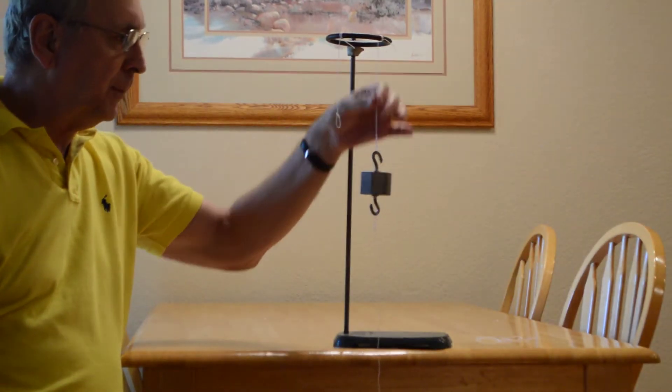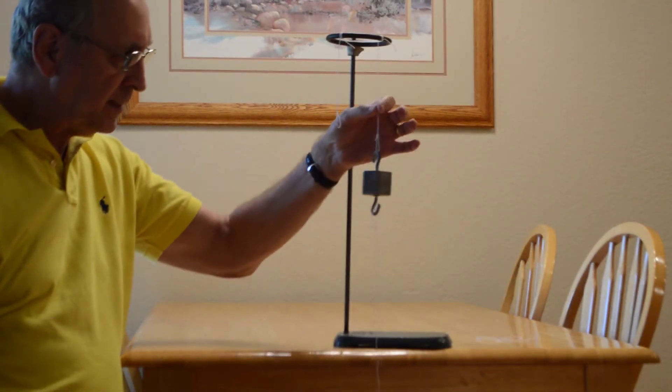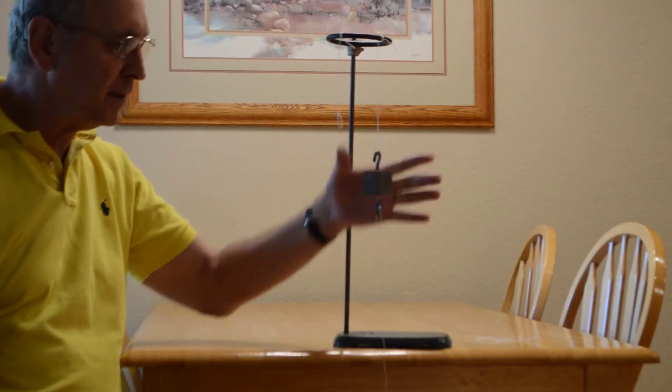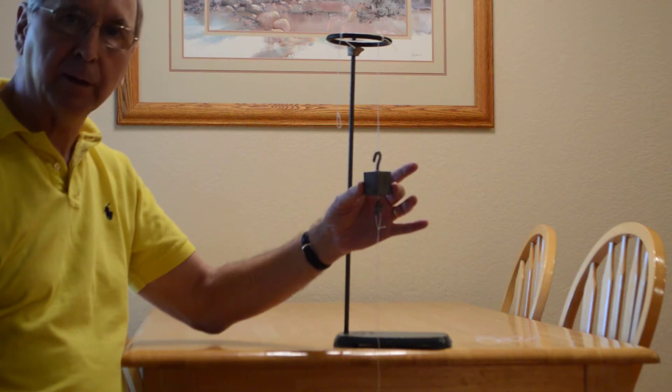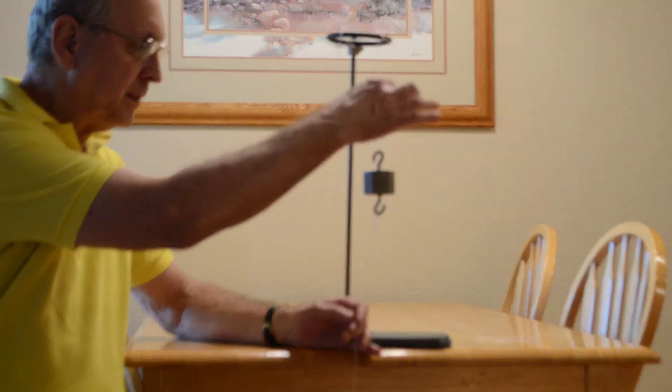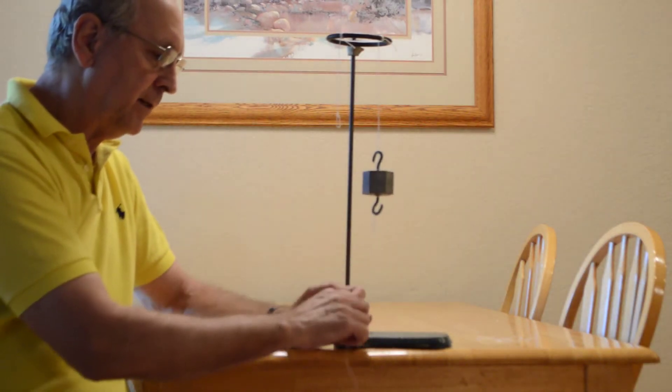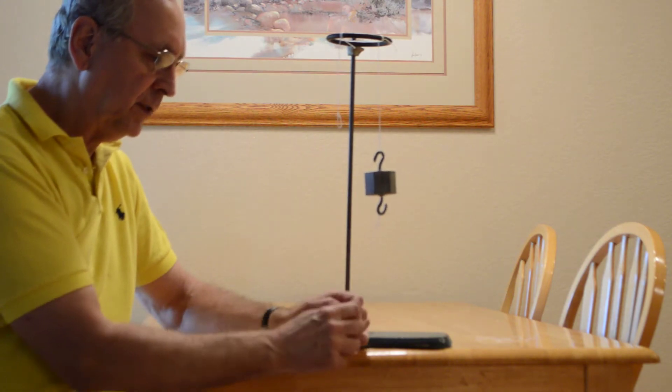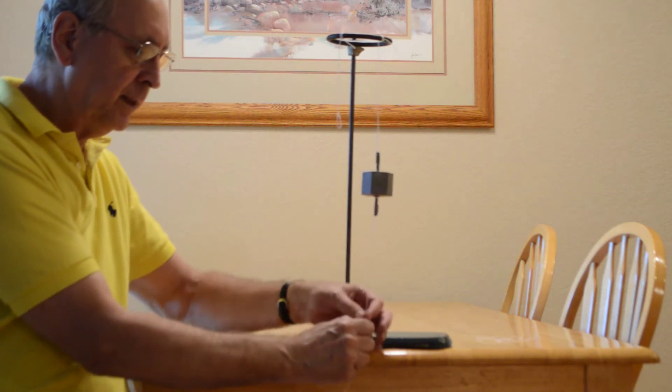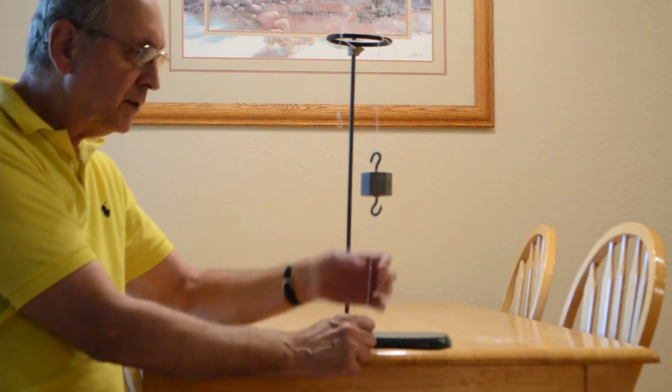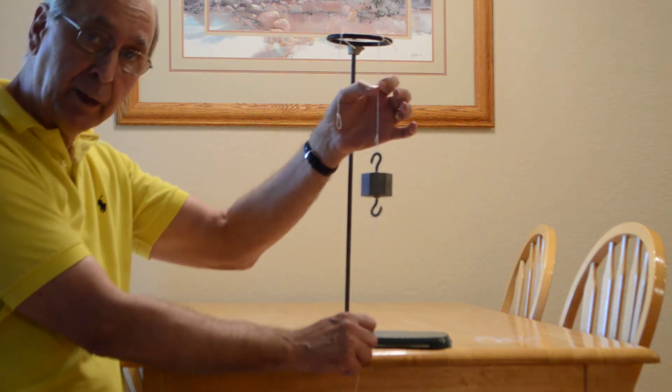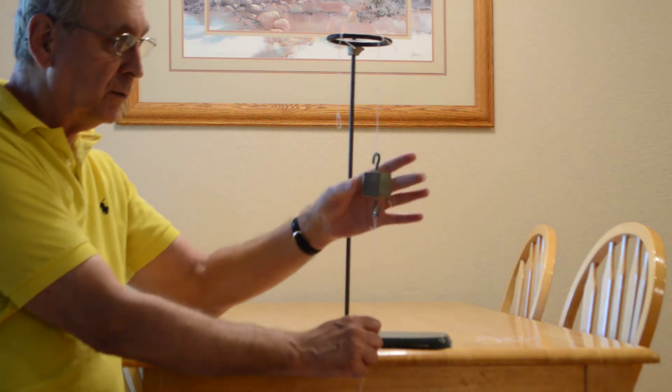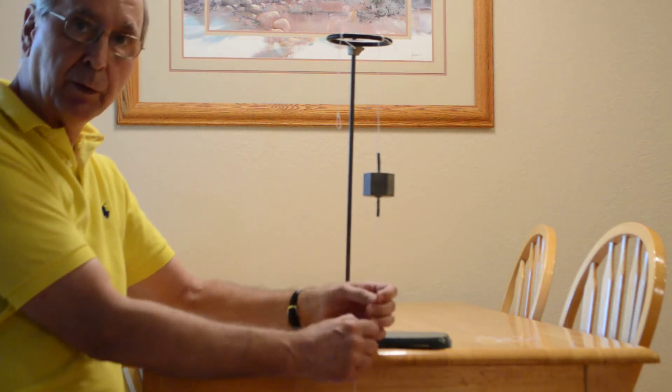The upper string now has a tension in it that supports the weight of this hunk of steel. That tension is equal to this weight. Now, if I pull slowly on this bottom string, I create a tension force which adds to this. So the tension in the top string is equal to the weight plus my pulling force.